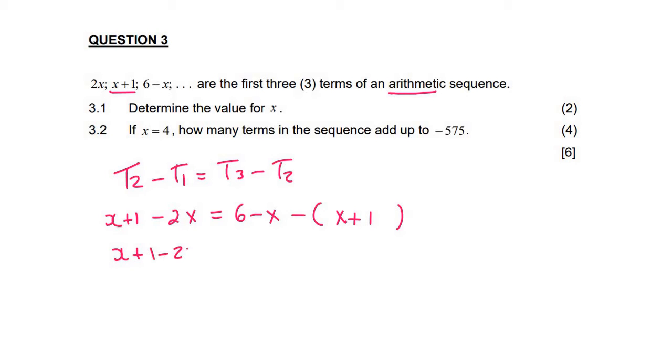And so x plus 1 minus 2x equals 6 minus x minus x minus 1. And now we just simplify. So on the left hand side, we end up with minus x plus 1. And on the right hand side, you would end up with 5 minus 2x.